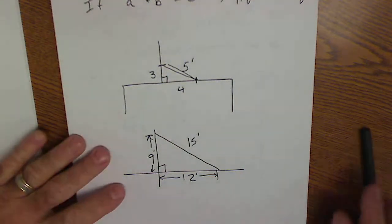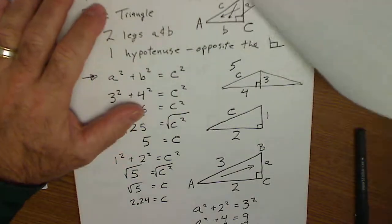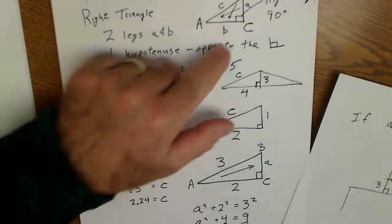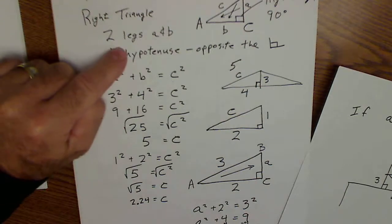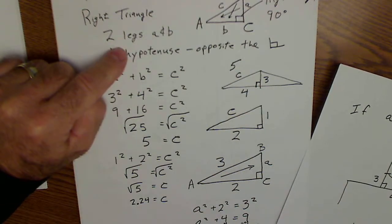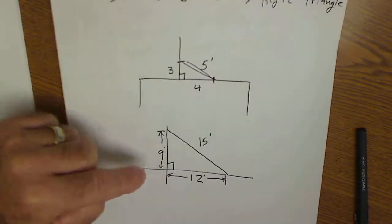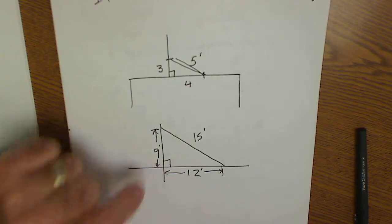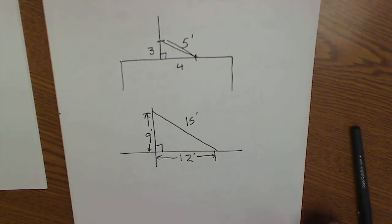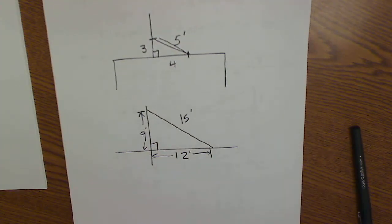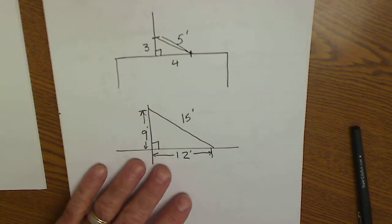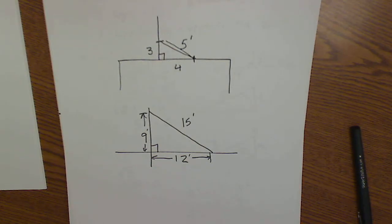The Pythagorean theorem is really useful: if you know it's a right triangle, the Pythagorean theorem works; or if the Pythagorean theorem works, then it is a right triangle. Hopefully that'll help you in the woodshop and out on the job site. Keep practicing it and get it figured out.